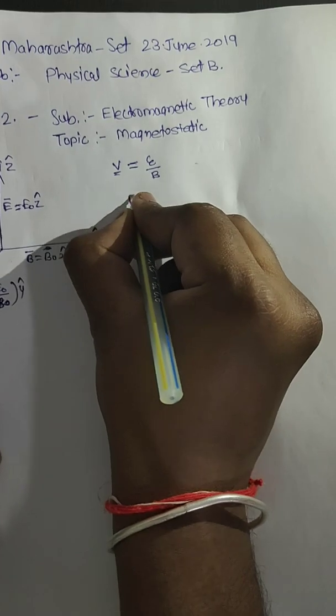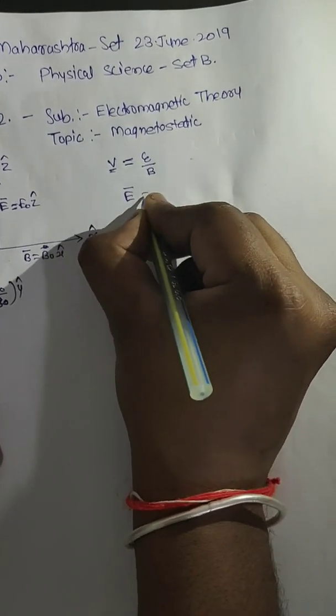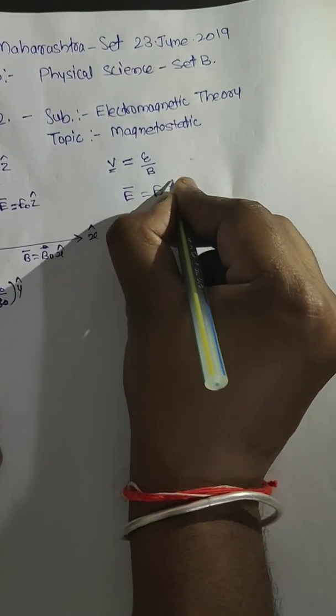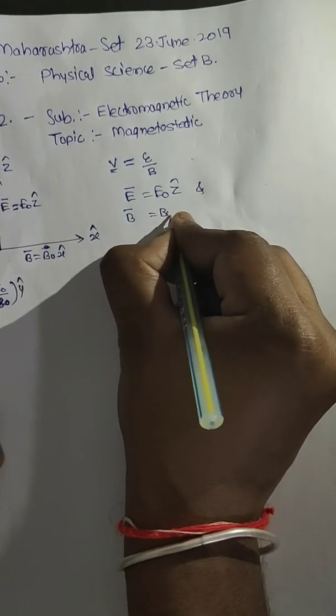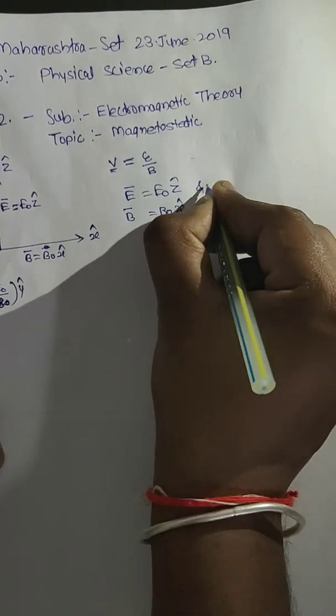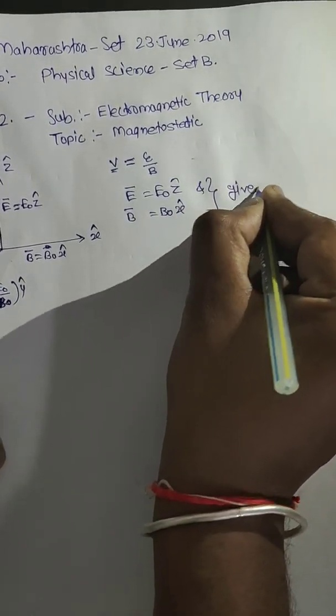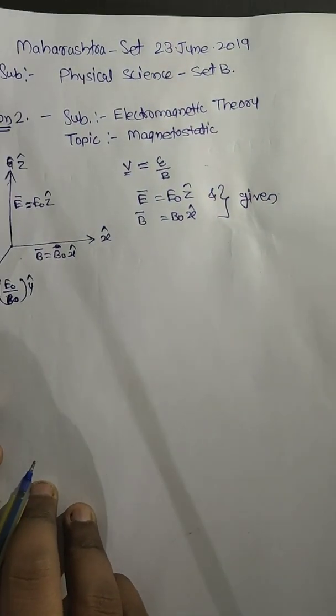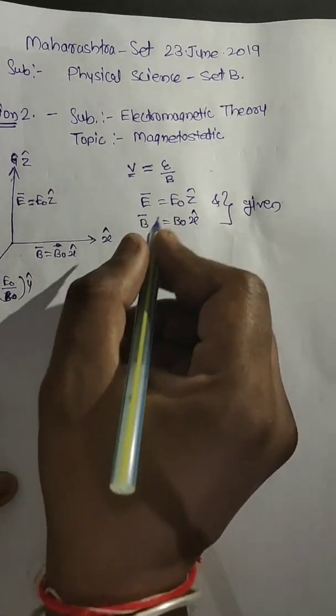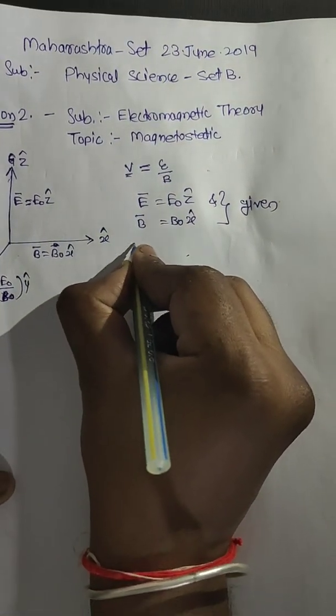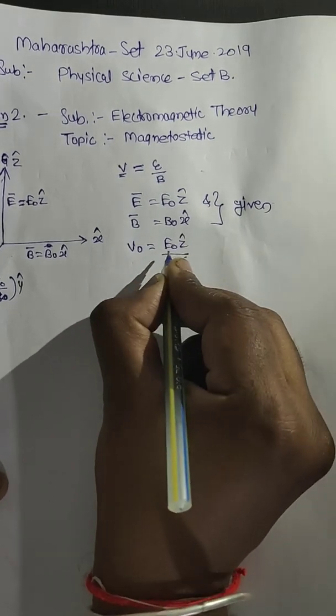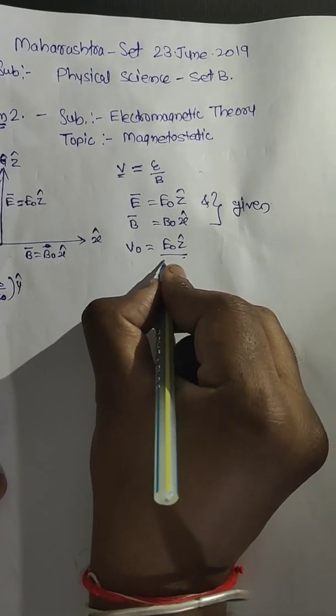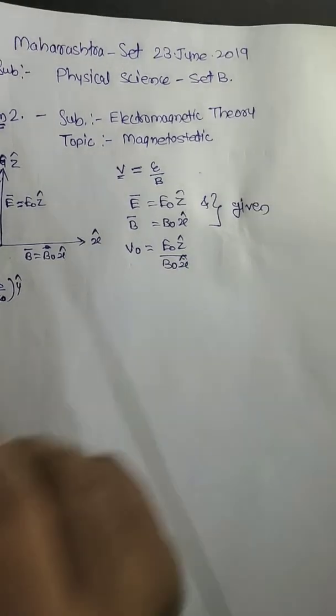The answer is that E is equal to E₀ in z cap direction and magnetic field B₀ is equal to B₀ in x direction. This is given in the example. So on this basis, V₀ is equal to E₀ upon z cap and V₀ is equal to B₀ upon x cap.